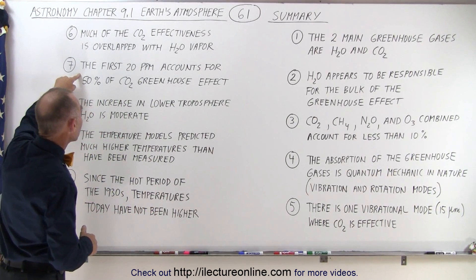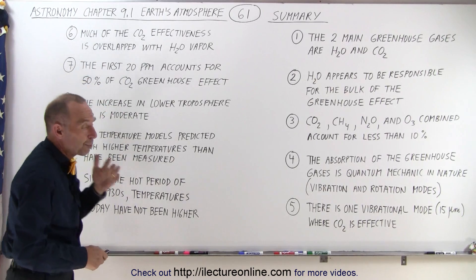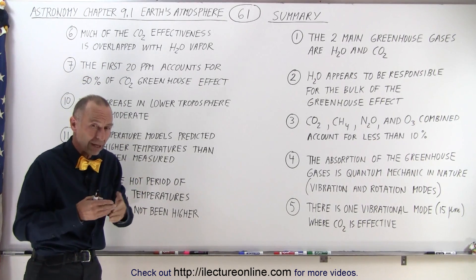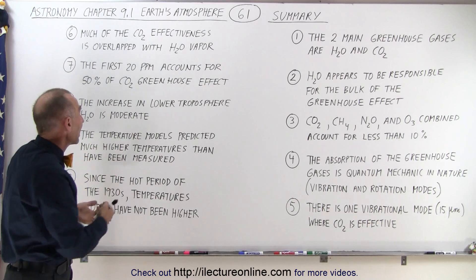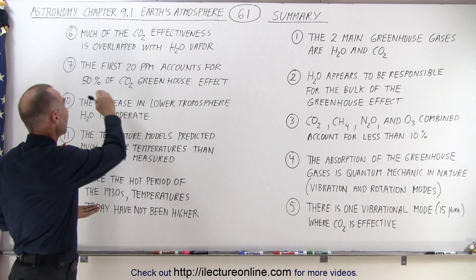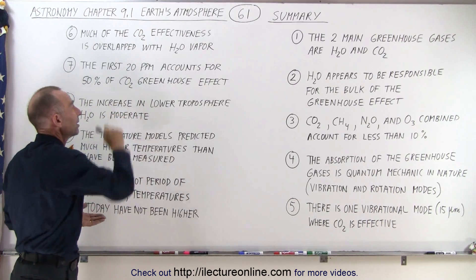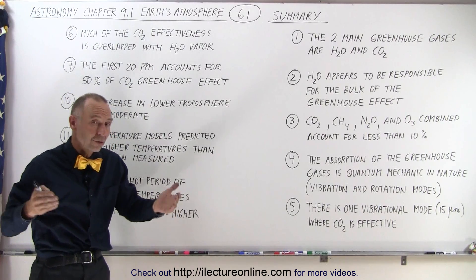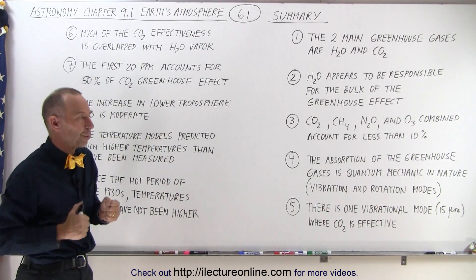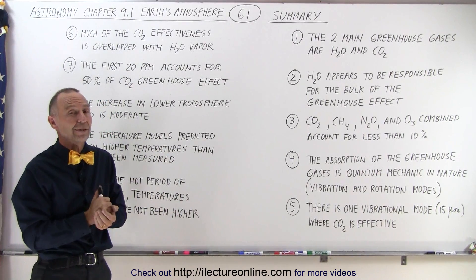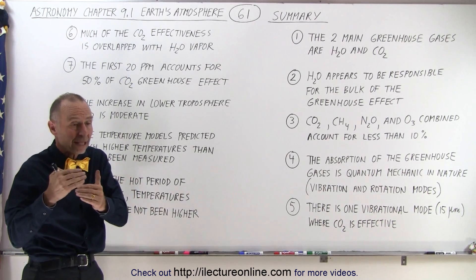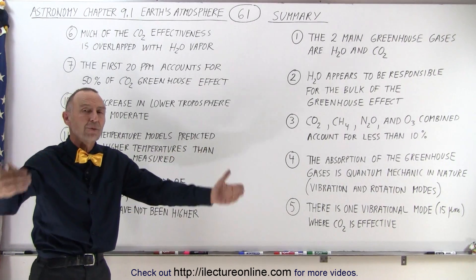Then we also realize that the first 20 parts per million that's in the atmosphere, and we talk about the carbon dioxide in the atmosphere, already accounts for 50 percent of the carbon dioxide greenhouse effect. In other words, there's currently about 400 parts per million of carbon dioxide in the atmosphere, and the first 20 percent of that already does 50 percent of the greenhouse effect.